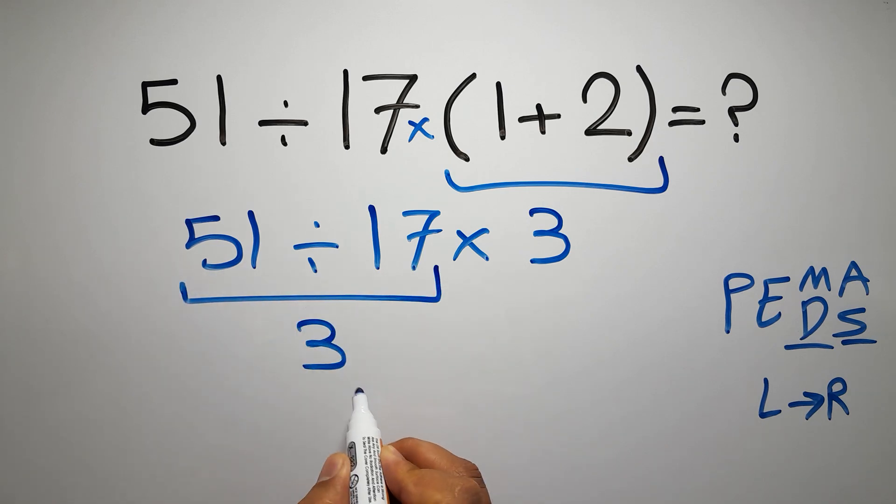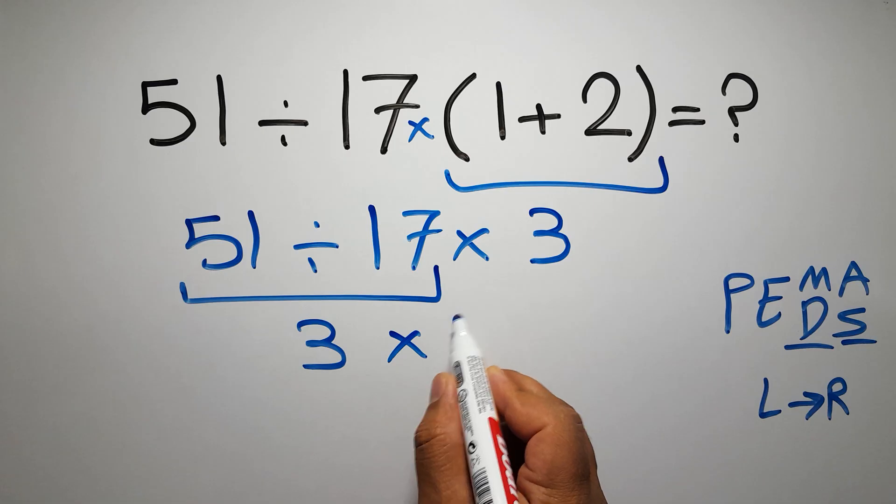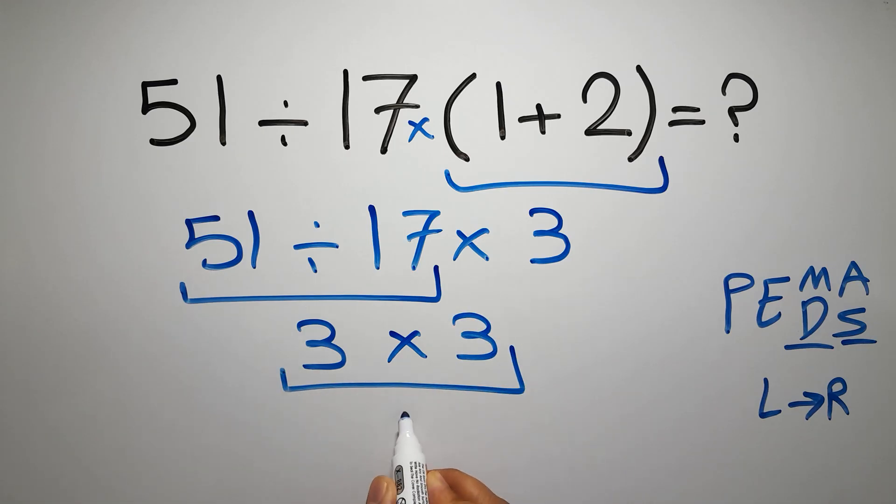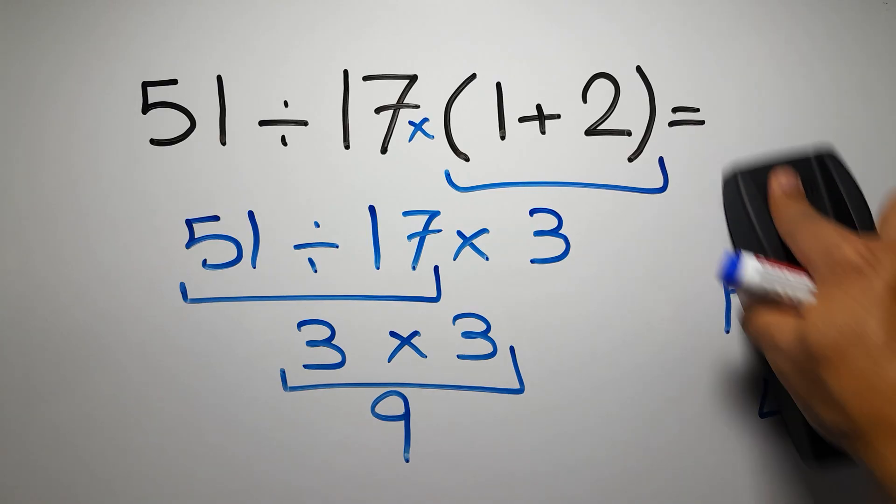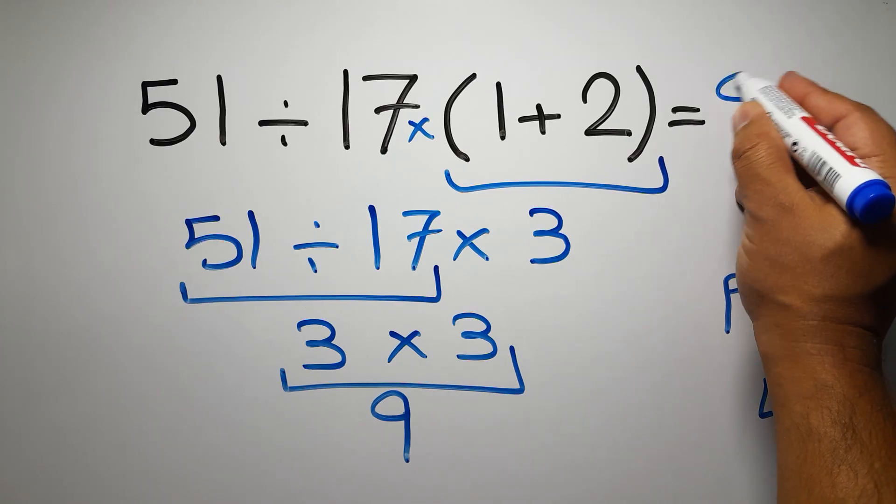So 3 times 3 is just 9, and this is our final answer to this problem. The correct answer is 9.